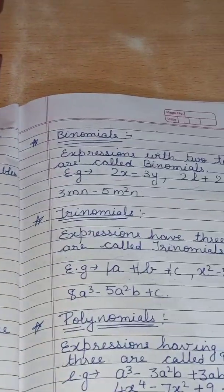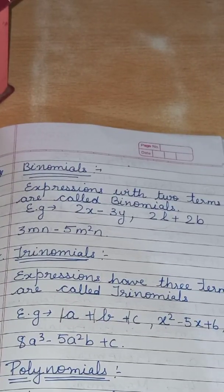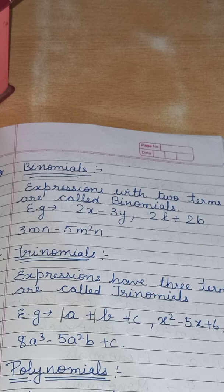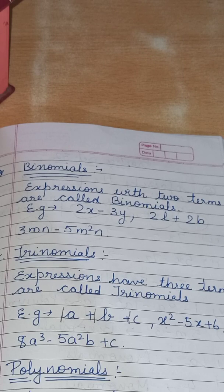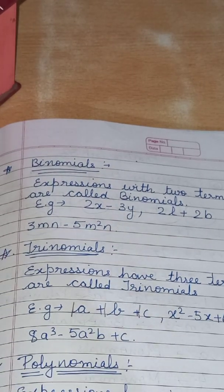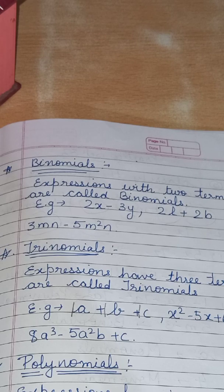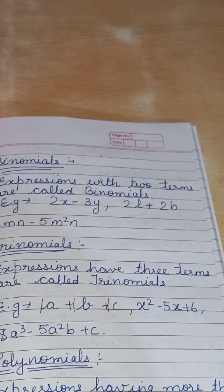Now the next one: binomials. Expressions with two terms are called binomials. For example: 2x minus 3y — two terms; 2x is one term and minus 3y is the second term. 2l plus 2b — one term is 2l, another is 2b. Also 3mn minus 5m²: 3mn is one full term and 5m² is the other full term — that is binomial, only two terms whether plus or minus.